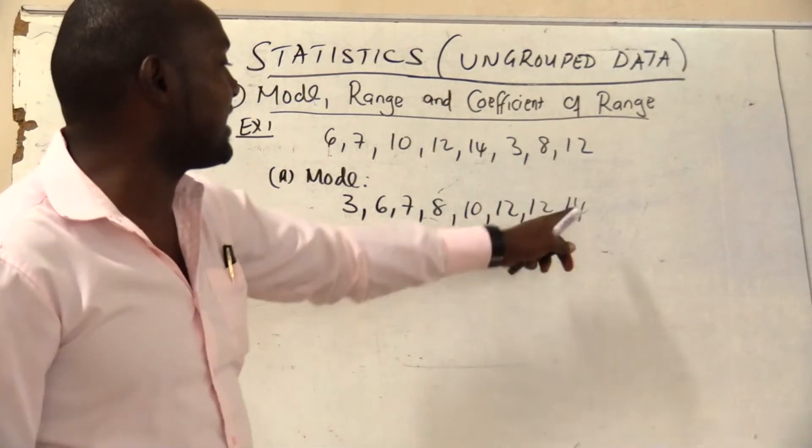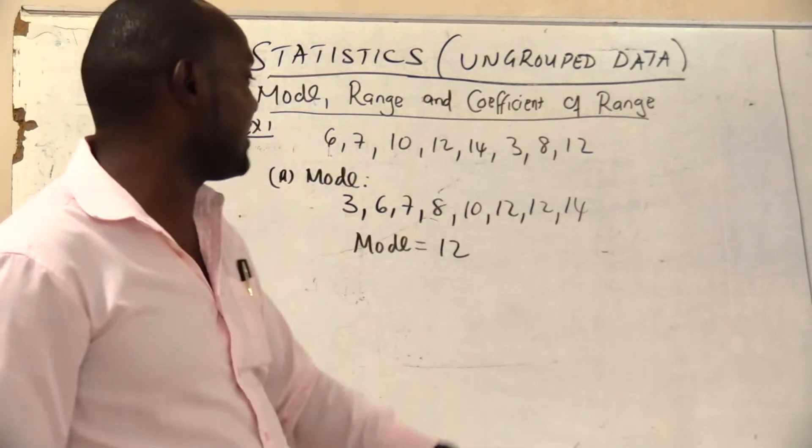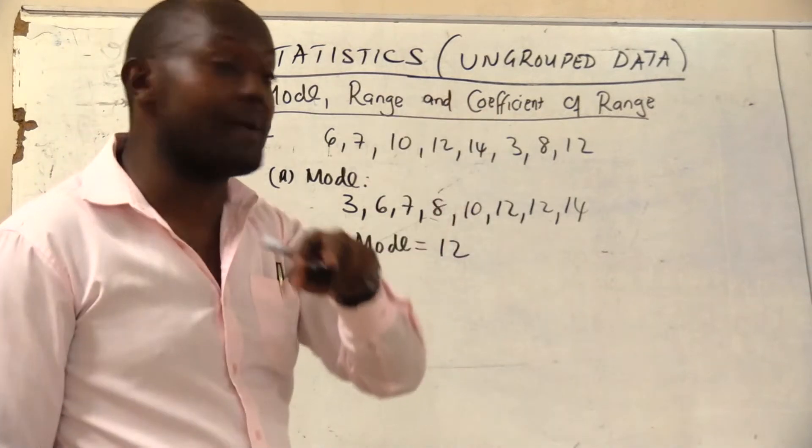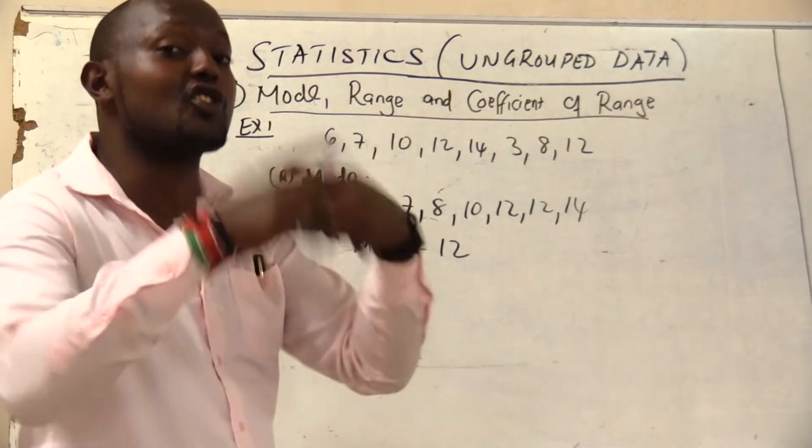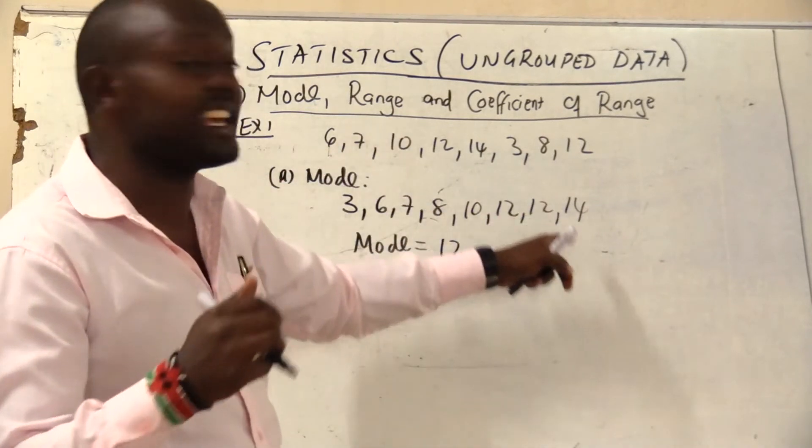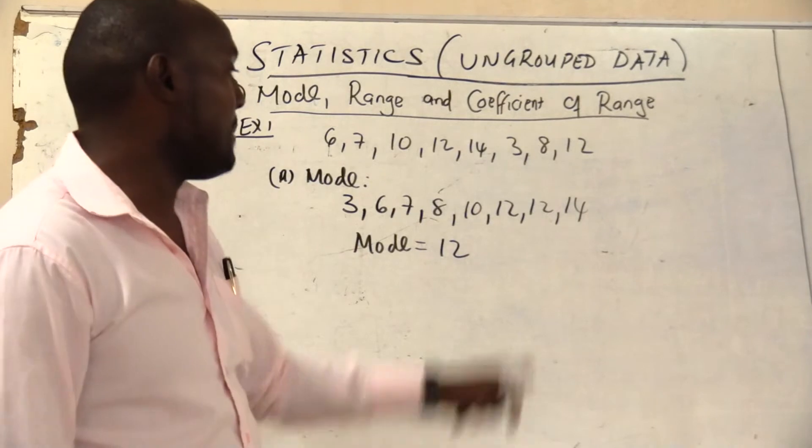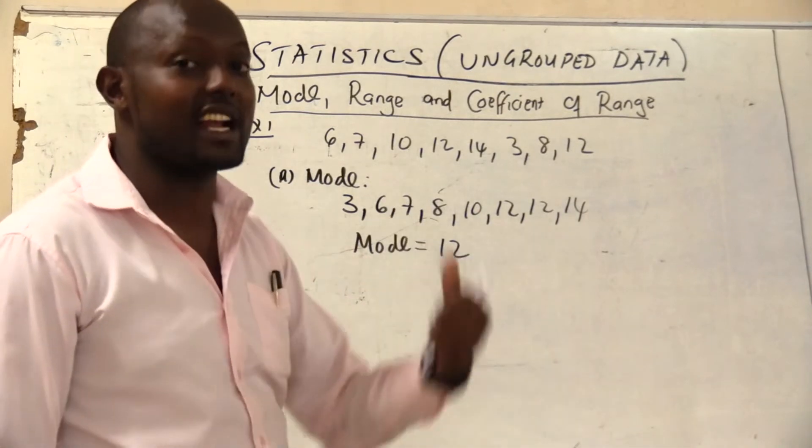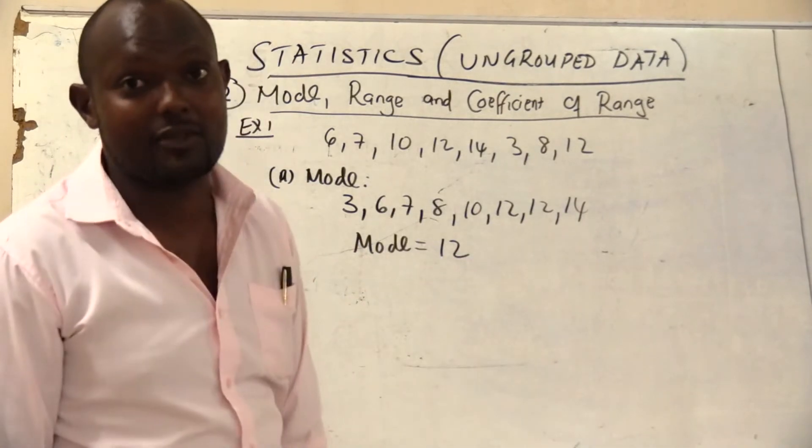But if I had like 14 occurring 3 times and 12 occurring 2 times, I could have said my mode is 14 because it is occurring more times than 12. But in this case 12 is the most occurring number so automatically that becomes mode.